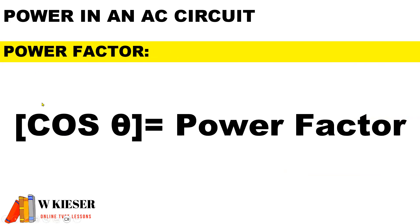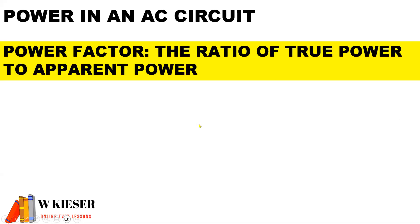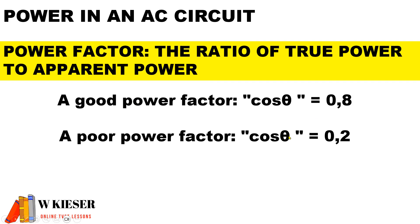Cos theta represents power factor. To define power factor it is the ratio of true power to apparent power. A good power factor is 0.8, a poor power factor is 0.2, and an ideal power factor which is considered to be perfect unity is 1.